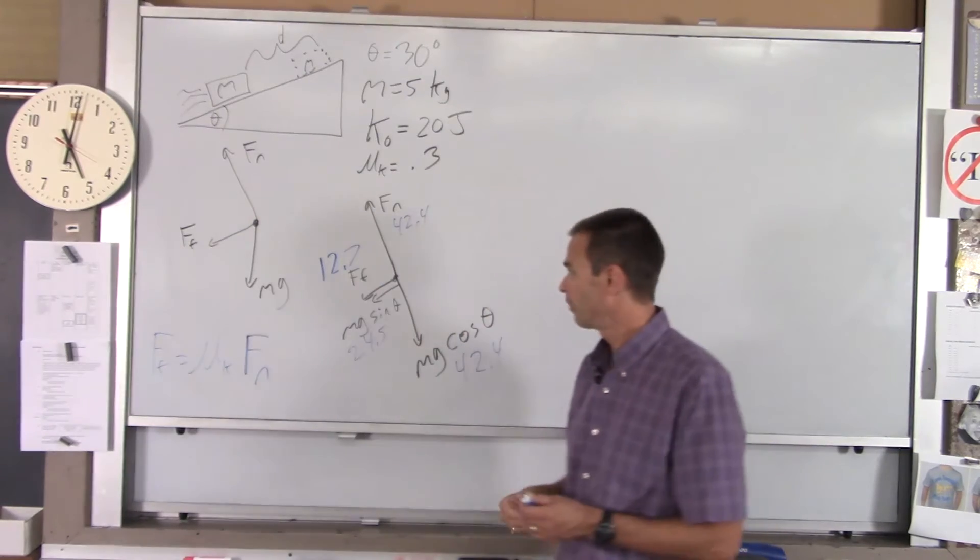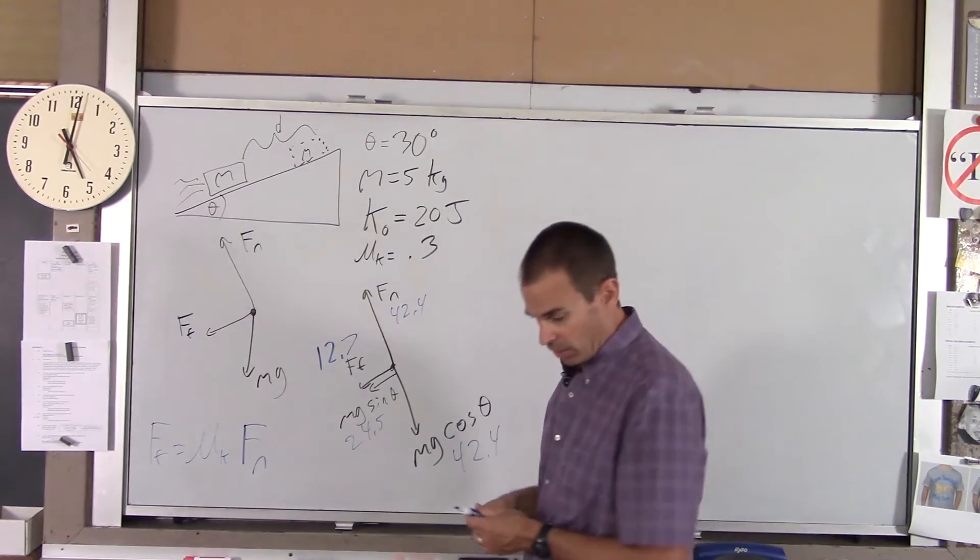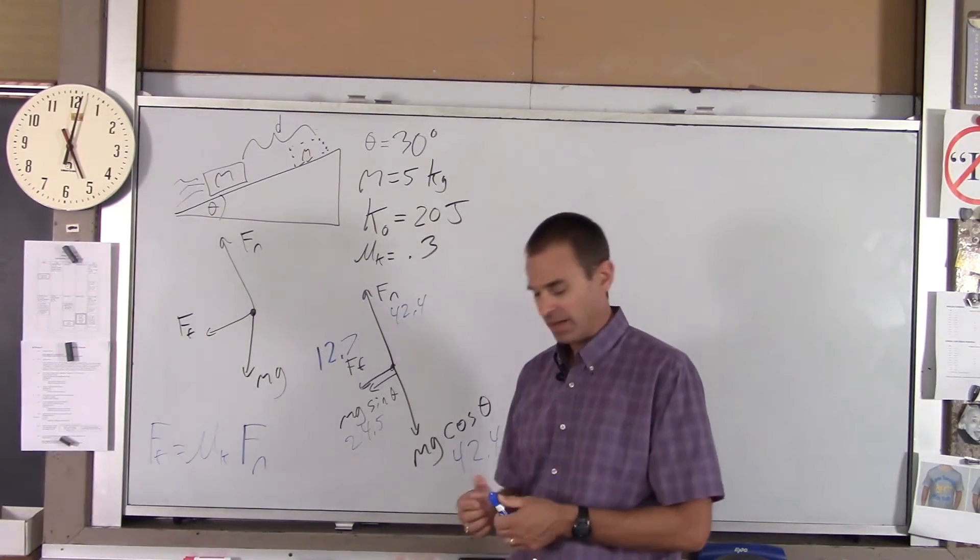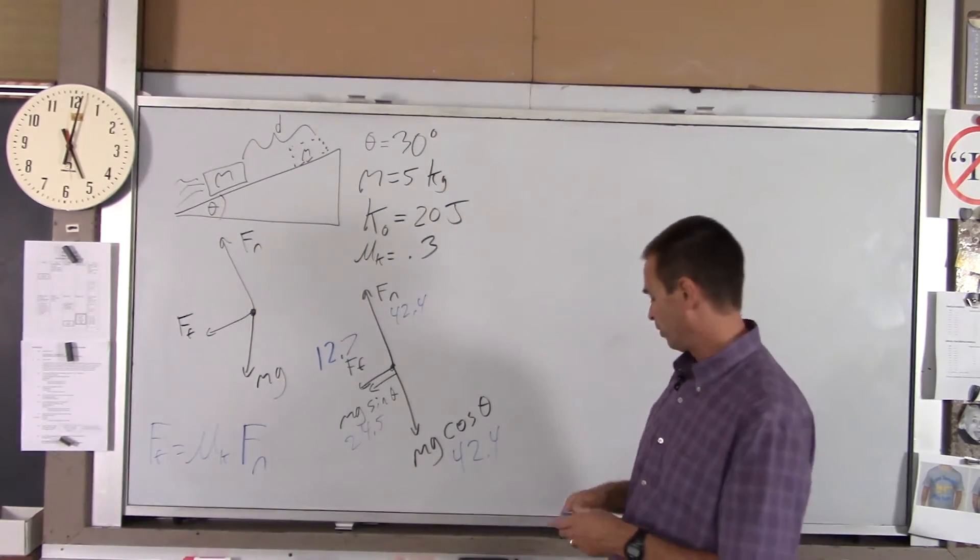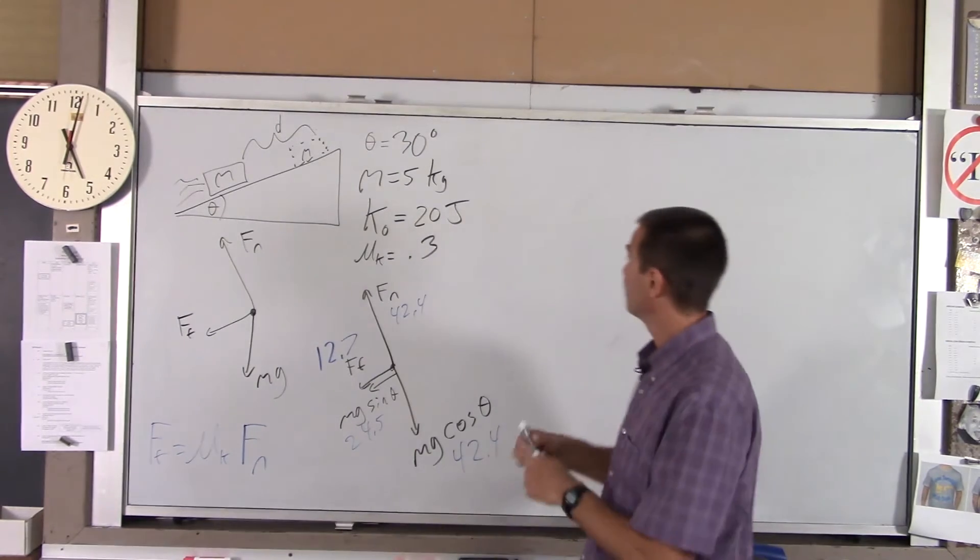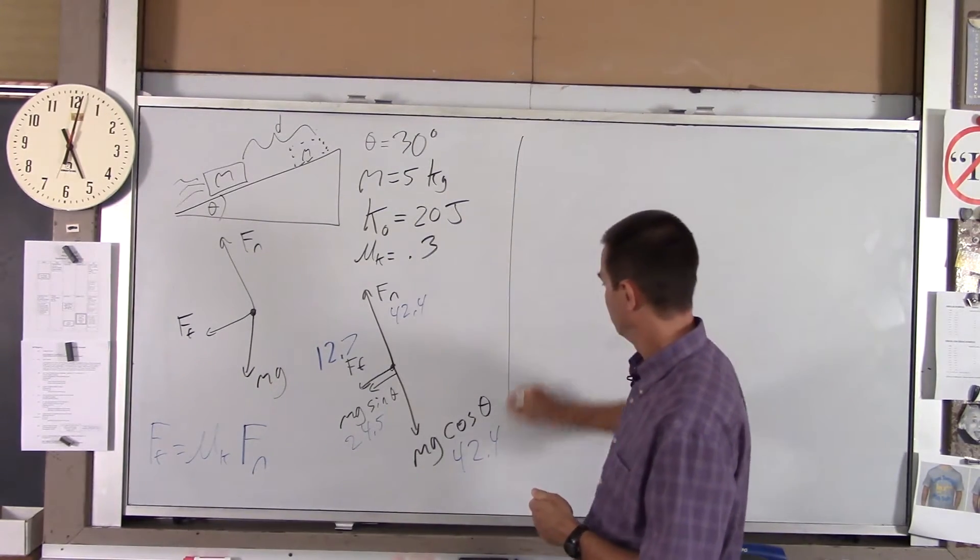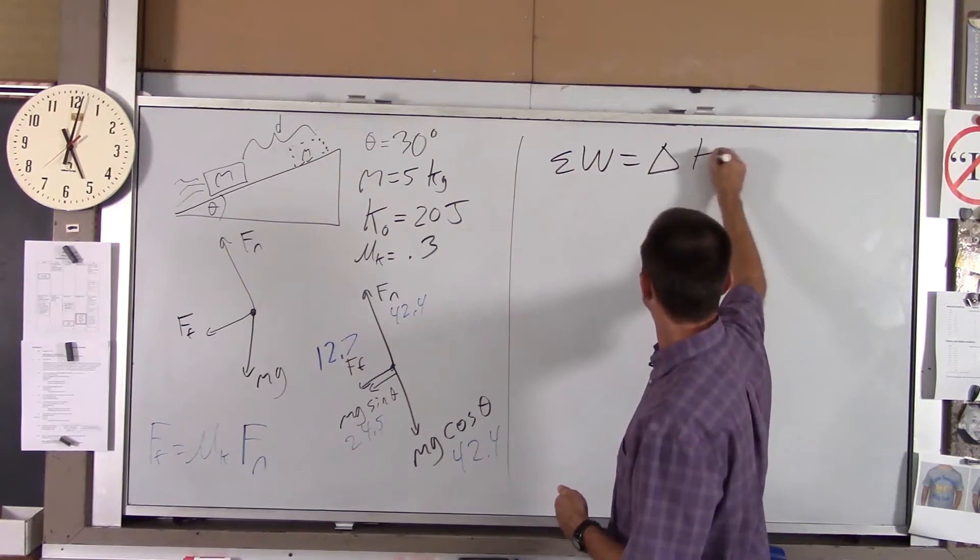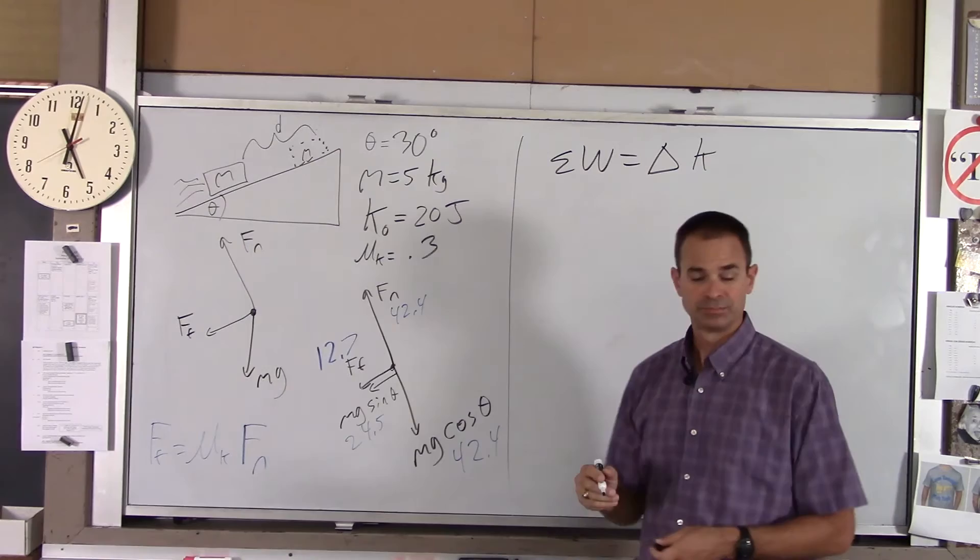So we've got all our forces. Now, to figure out how far up the incline it goes, we're going to use the work energy principle. So, work energy principle looks like this. Network is change in kinetic energy.